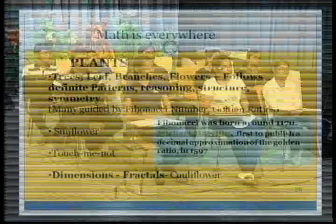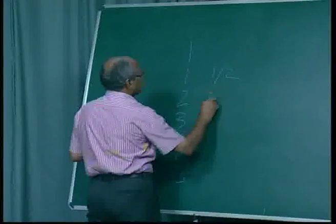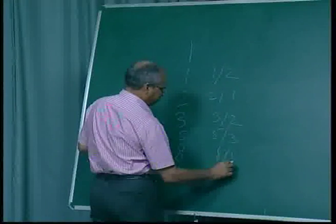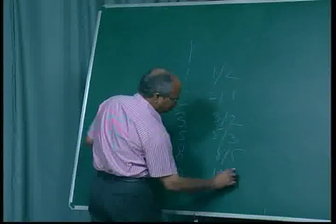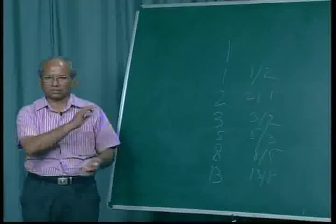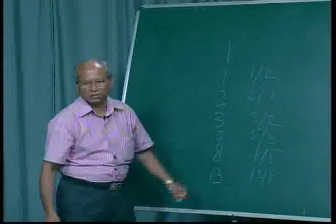There is another number called the golden ratio. Have you any idea about golden ratio? [Students: No.] If you divide — 1 divided by 1, then 2 by 1, 3 by 2, 5 by 3, 8 by 5, then 13 by 8 — this preceding term divided by the next term — if you divide, you see this sequence: it is a converging sequence, and where it converges is 1.618. The ratio 1 to 1.618 is the golden ratio.